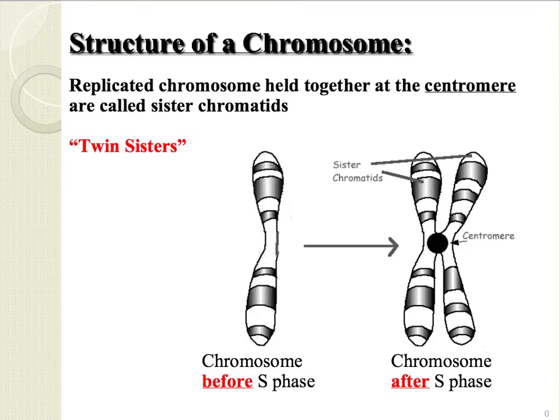Let's take a look at the structure of a chromosome. When a chromosome has been replicated, both sides, also known as sister chromatids, are held together at the centromere.